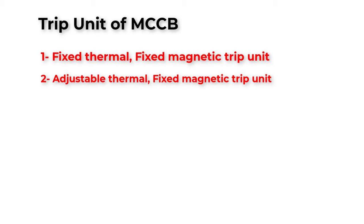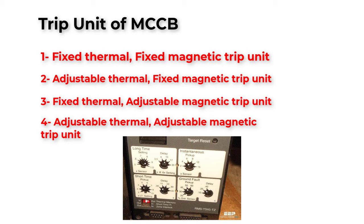Number three is fixed thermal, adjusted magnetic trip unit. Now we can change only the setting of short circuit. And at last, we have adjusted thermal, adjusted magnetic trip unit. So we can change the whole settings of overcurrent and short circuit protection. But you have to pay more money to buy this breaker.